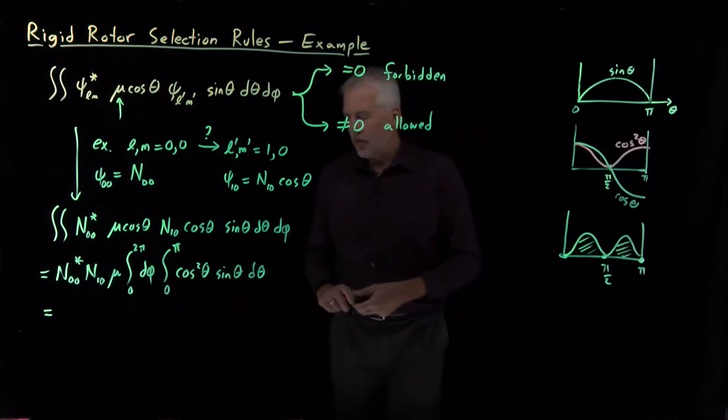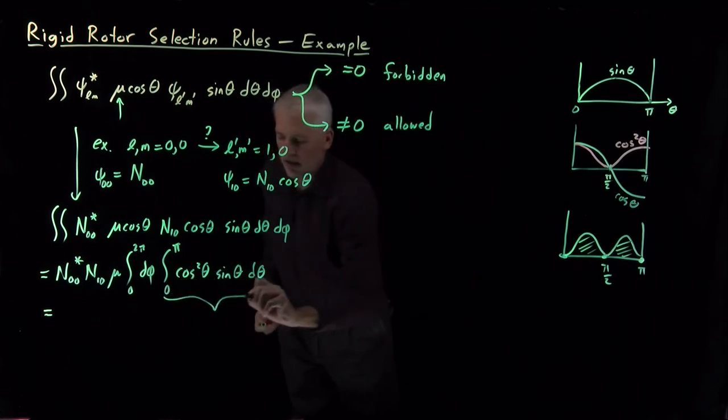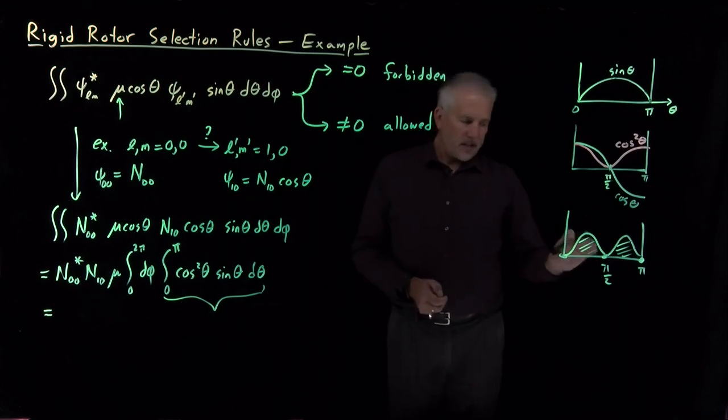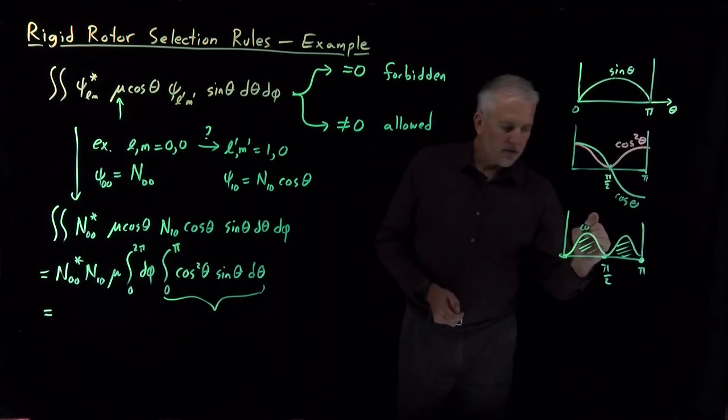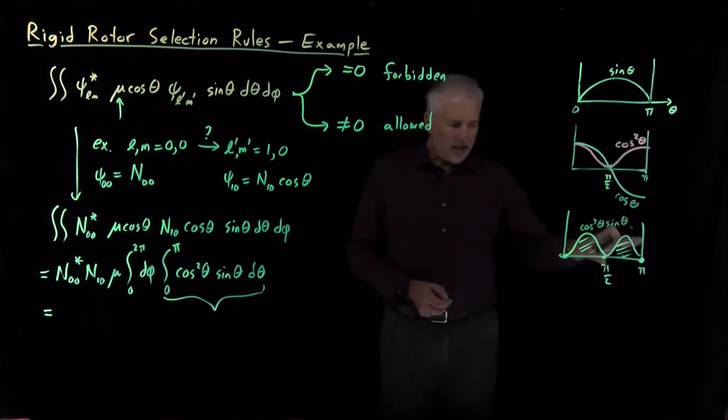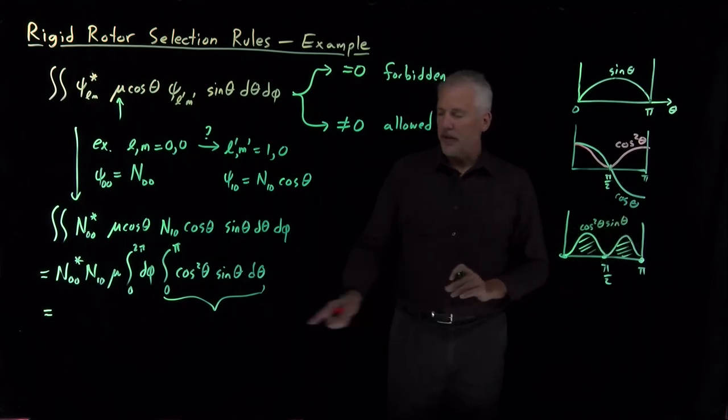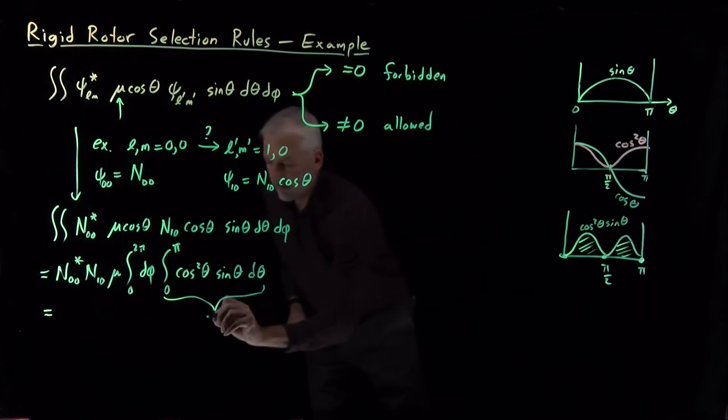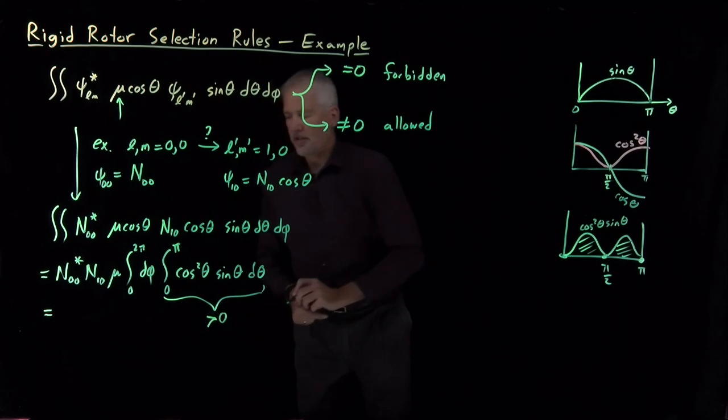Even those specific details are too much information. I don't need to know where the zeros are. All I need to know is that function is either positive everywhere or it's sometimes zero, but it never dips negative. That's enough for me to say that the area under this curve is non-zero and is positive. That's, after all, what we're interested in here. This integral of cosine squared sine theta, that's asking for the area underneath this curve, cosine squared sine. And what that area comes out to be is not relevant at the moment. All we need to know is that that integral is, in fact, greater than zero, non-zero.